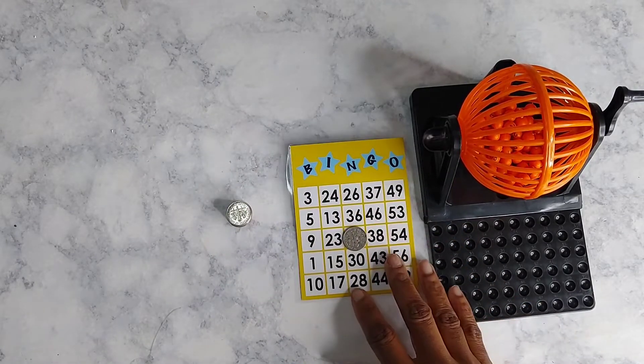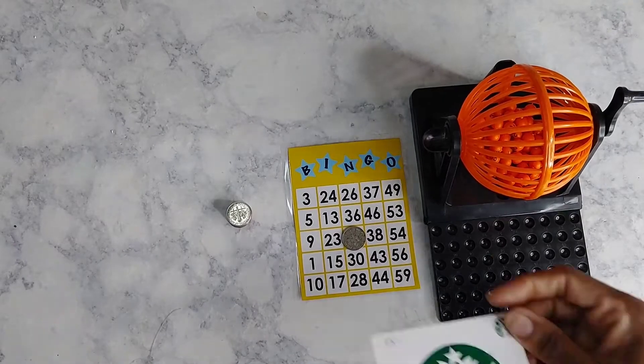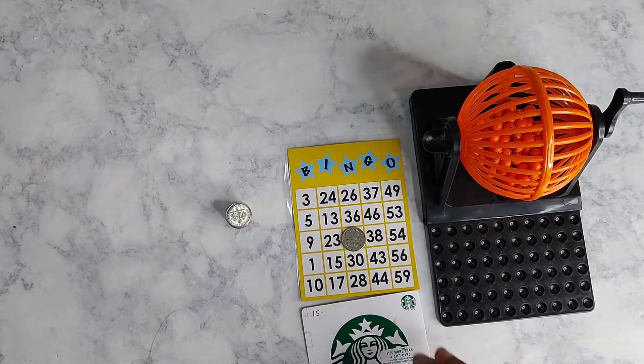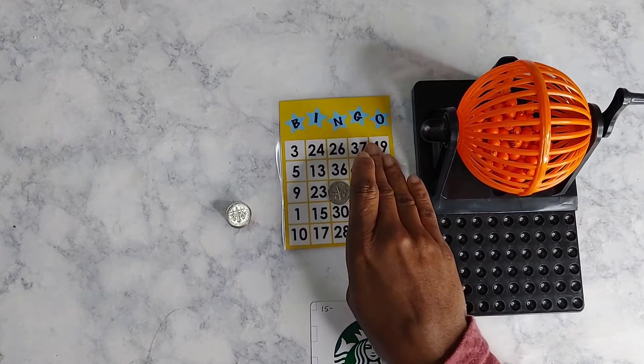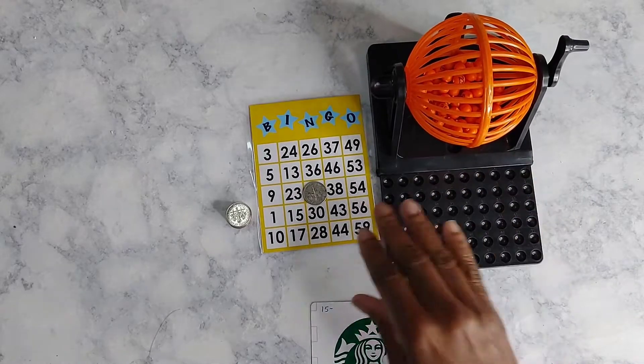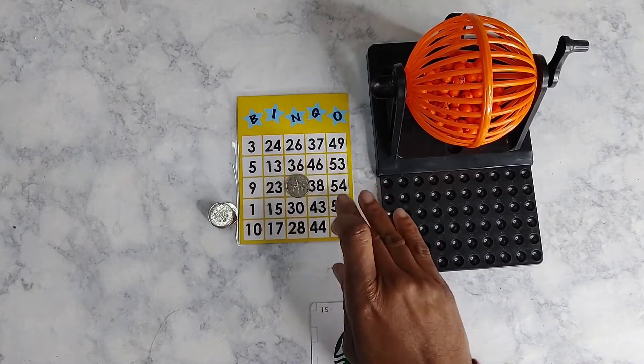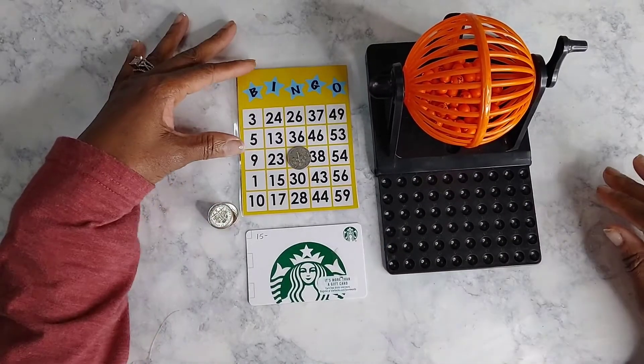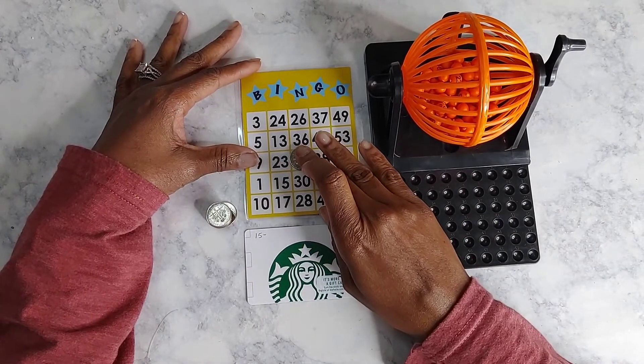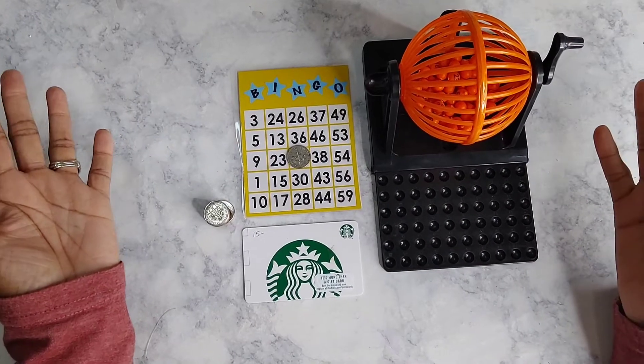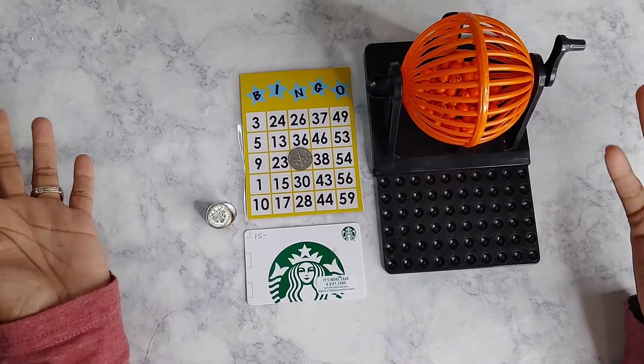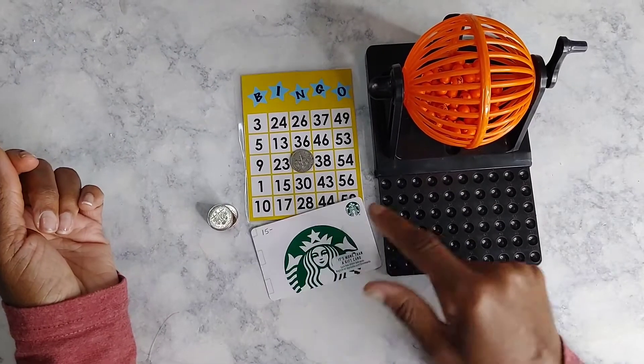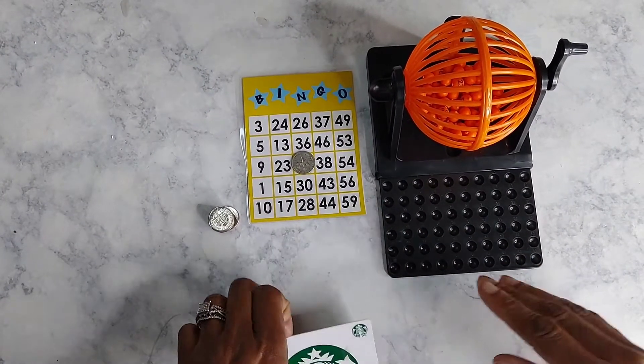And our prize tonight is a fifteen dollar Starbucks gift card that one of my beautiful supporters sent me to give away to you guys. Was that not nice? Now that was nice, I really appreciate it, and she know who she is. Thank you, thank you, thank you. So the idea is I came up with this idea: I will pull twenty numbers, and if I bingo within these twenty numbers, the first person that says bingo in my comment section will win this gift card.